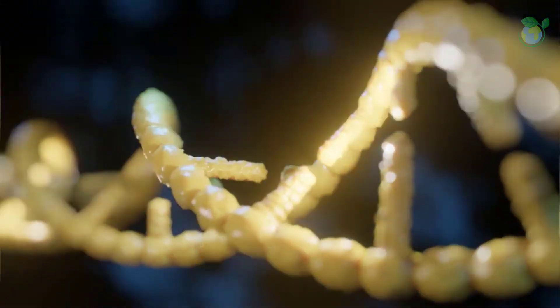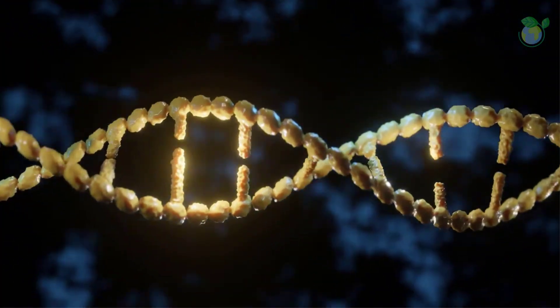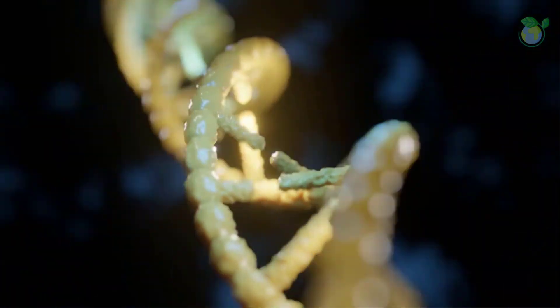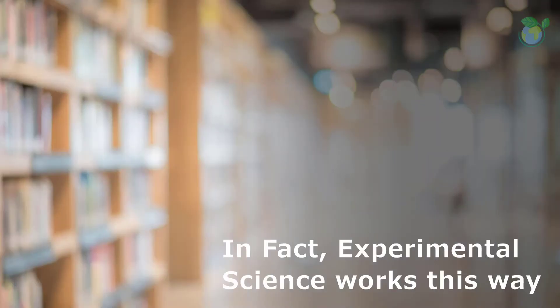Let's approach from the way we do observations, identify, perform experimental investigation, and attempt to put together an explanation of what has happened by accounting or justifying scientific observations. Experimental science works this way — it encompasses keen observation, collection of data, and trying to interpret them and to explain how things work.